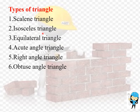In an isosceles triangle, any 2 sides of the triangle are the same. In an equilateral triangle, all 3 sides of the triangle are the same and all 3 angles are equal to 60 degrees.